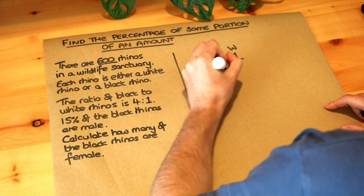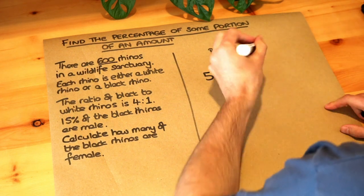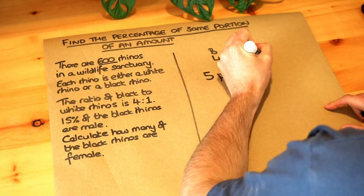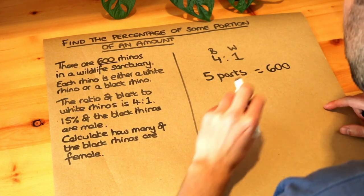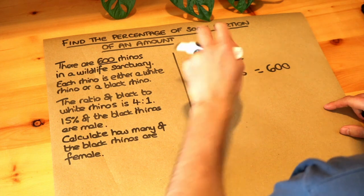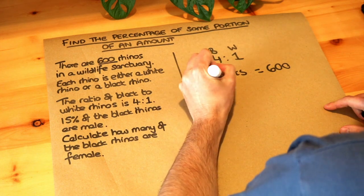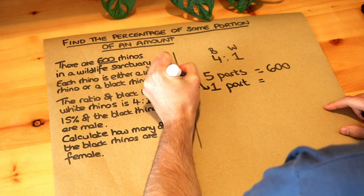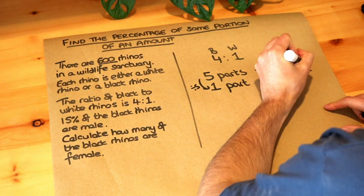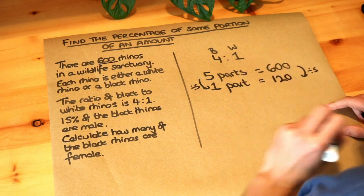So five parts representing all the ratio, black and white, that's worth 600 rhinos. And we're trying to find the number of black rhinos. So that's the four parts. So we can work out one part first. So we divide by five to get from five parts to one part. So we divide that by five and that gives you 120 rhinos.